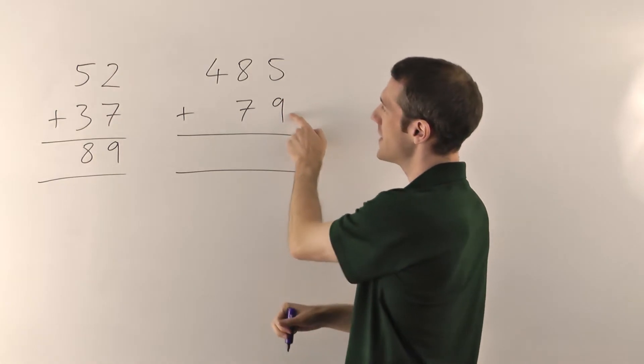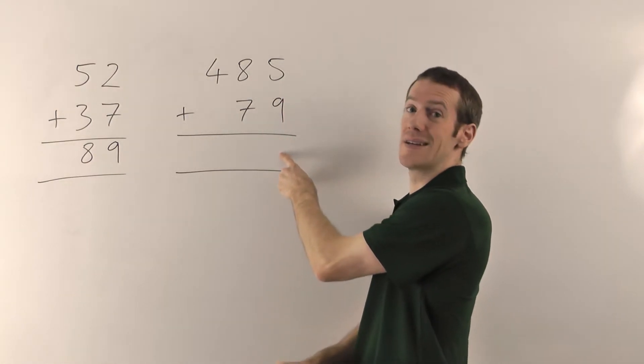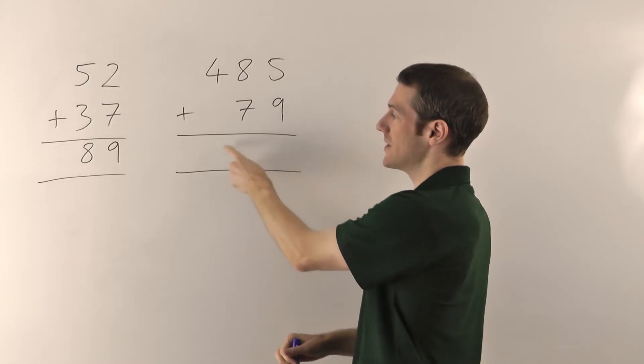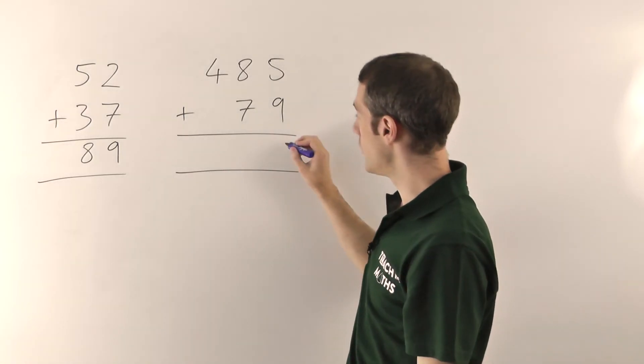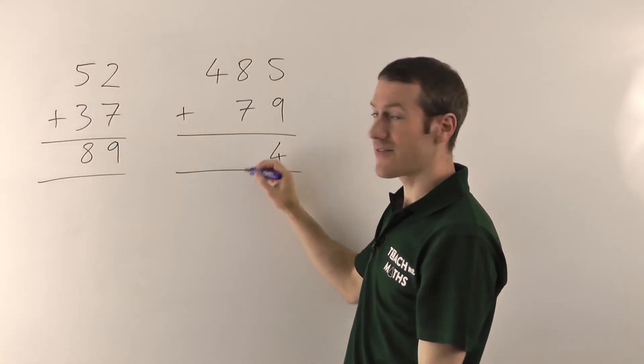So same thing, 5 plus 9, now that gives you 14. But you can't be fitting the 14 in here. You can only fit one digit in each of these spaces. So the way it works is you put your 4 from the 14 in there, but the 1 that would make it 14, you have to carry it.